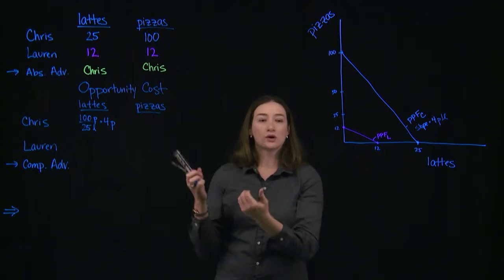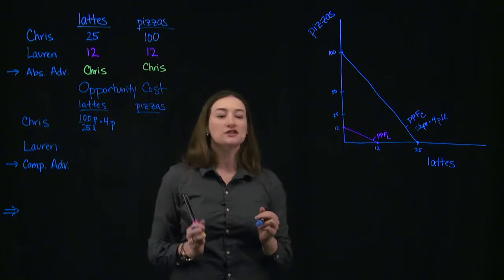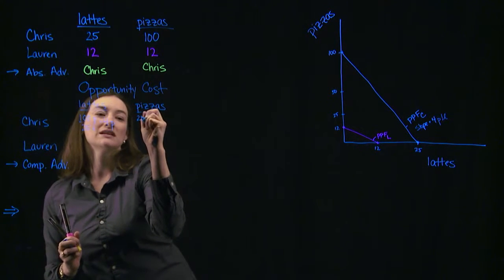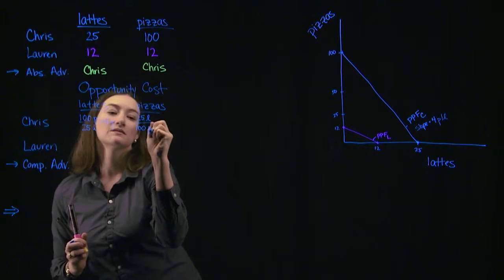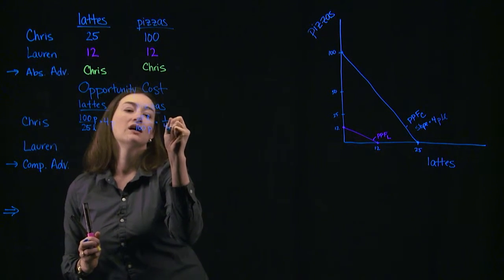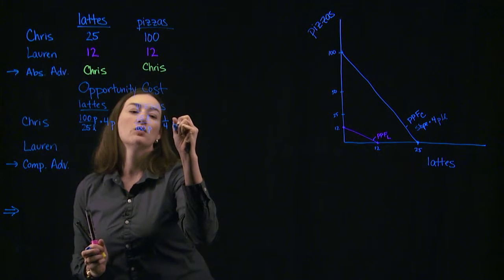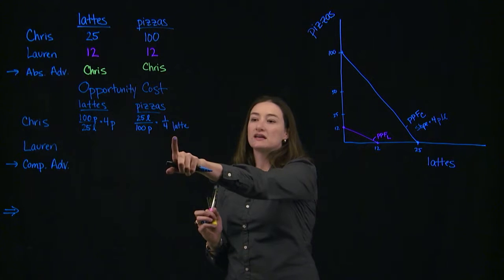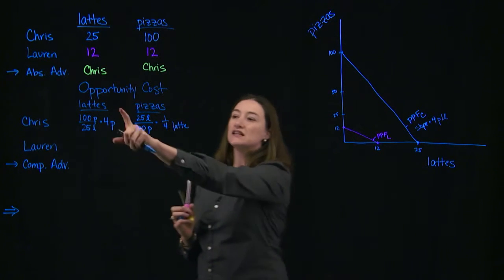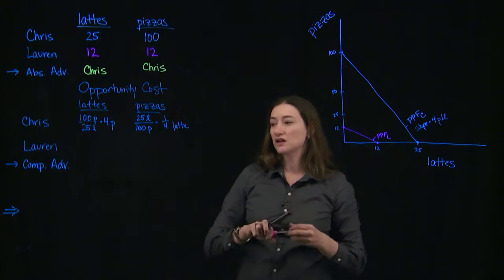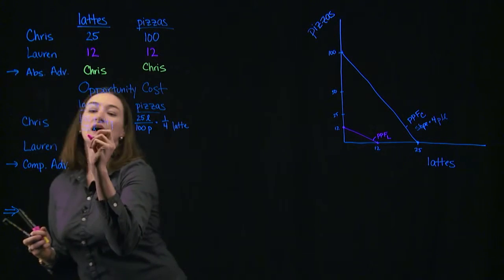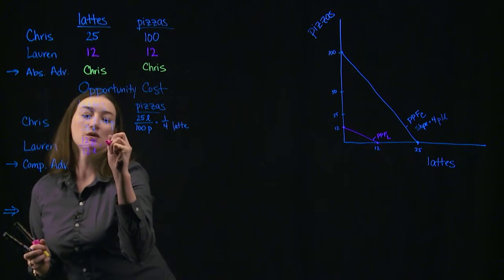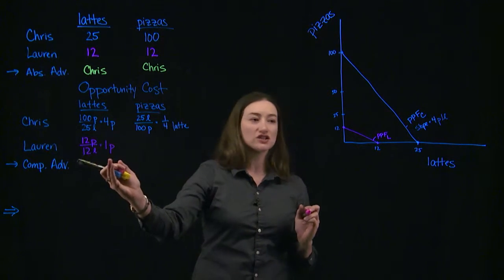Likewise, we can think about the opportunity cost of producing pizzas — it's going to be the reciprocal of that slope. I calculate this by taking 25 lattes divided by 100 pizzas, which gives me 1/4 latte per pizza. So each pizza costs Chris a quarter of a latte, and each latte costs him 4 pizzas. We can do the same calculation for Lauren: 12 pizzas divided by 12 lattes gives a ratio of 1 pizza per latte. So the cost of a latte for Lauren is just 1 pizza, which is the slope of her production possibilities frontier.